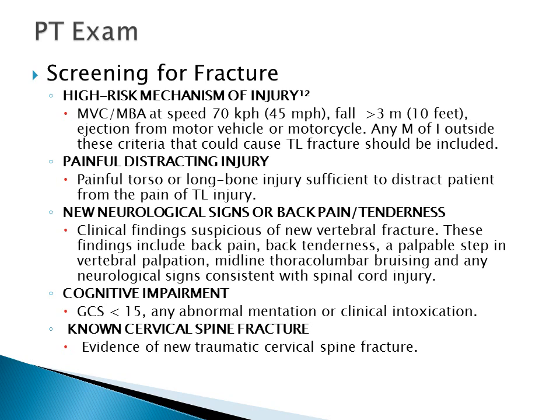For cervical spine fractures, we have the C-spine rule algorithm. However, we do not have the same algorithm for thoracic spine fractures. O'Connor and Walsham have created an algorithm, which is similar to the C-spine classification. A positive indication in any one of these categories would refer for imaging. However, this is based on a low level of evidence, and more research is needed to validate this algorithm.